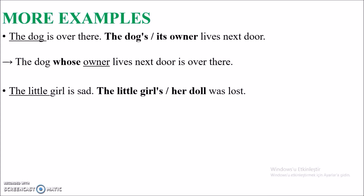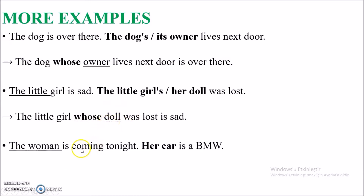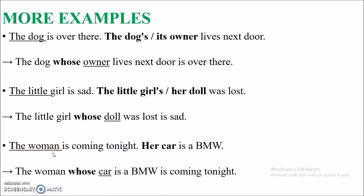Second sentence: 'The little girl is sad' and 'Her doll was lost.' The noun I'm giving more information about is 'the little girl'. So: 'The little girl whose doll was lost is sad.' 'Doll' is the noun after 'whose'. Third example: 'The woman is coming out' and 'Her car is a BMW.' So: 'The woman whose car is a BMW is coming out.' Don't forget: after 'whose', you must use a noun — 'whose' plus a noun.